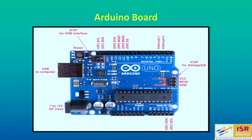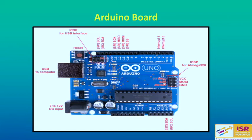This is the Arduino Uno board, where you can see various pins available: some are analog pins, some are digital, and some are power pins. In the Arduino Uno we have 6 analog pins, 13 to 14 digital pins, and a few power pins. Power pins contain VIN (input voltage), ground, 5 volts, 3.3 volts, and reset. There is also a reset button to restart the program from the beginning. You have a USB-to-computer port for connecting to a PC, and a 7 to 12 volt DC input for direct power.